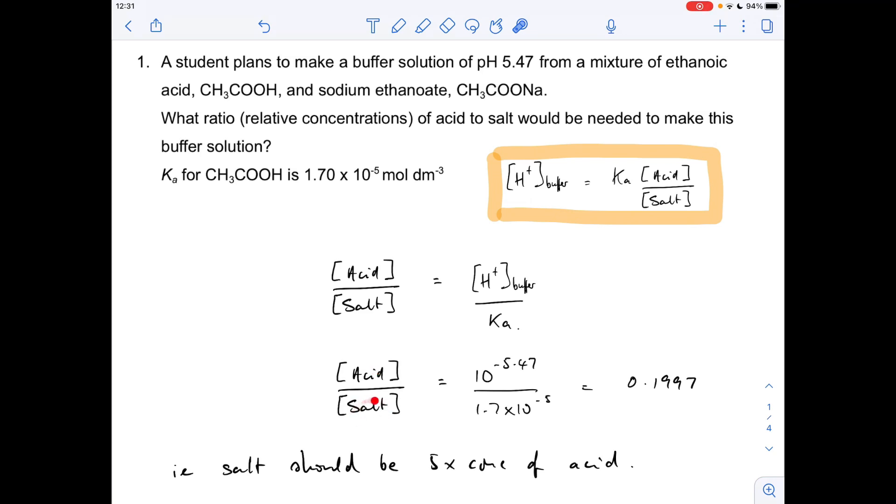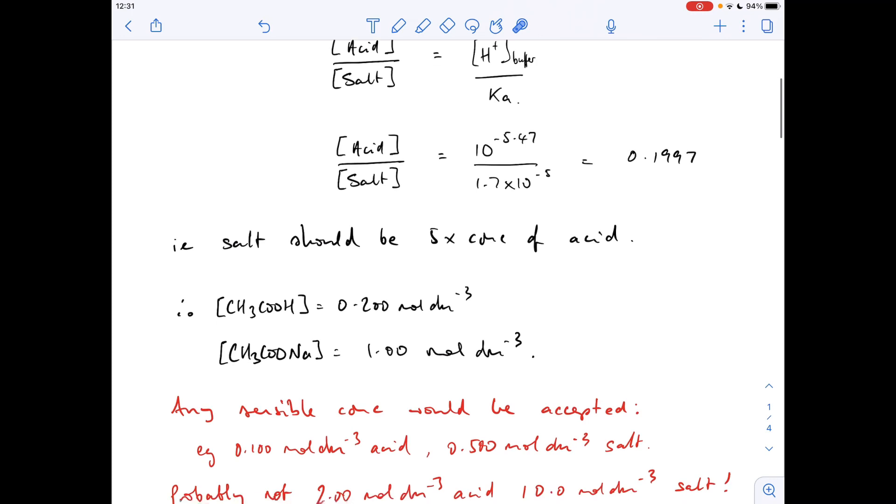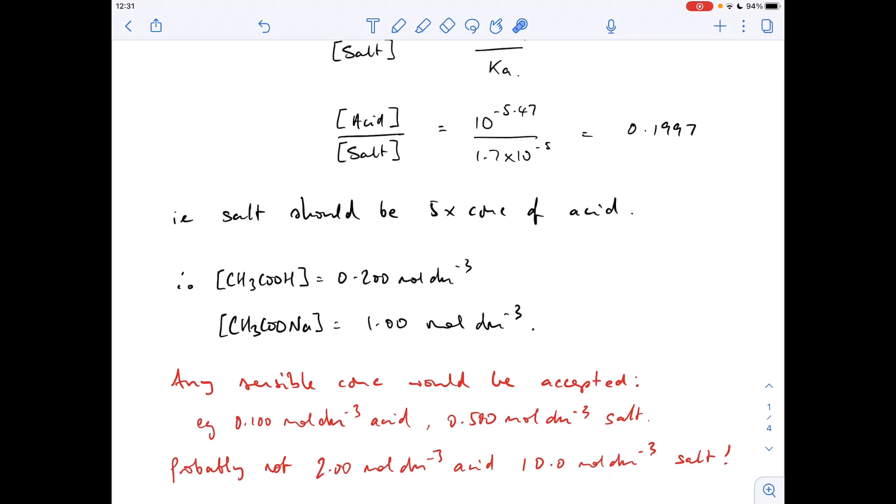So to get an answer of 0.2 when you divide that by that, you basically need that to be 5 times bigger than that. So any sensible concentration really would be accepted. So I've gone for 0.2 moles per decimeter cubed acid and 1 mole per decimeter cubed salt - you see that's 5 times that.